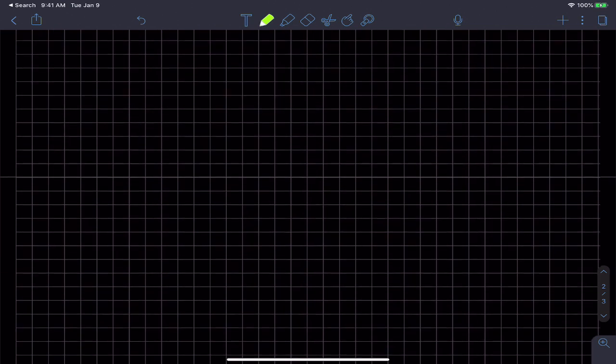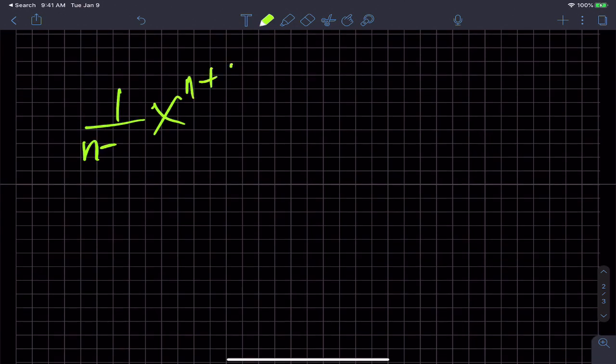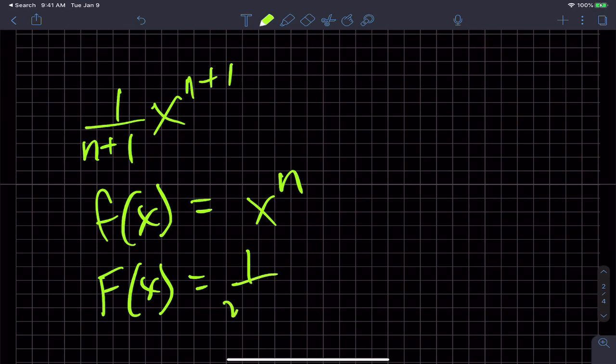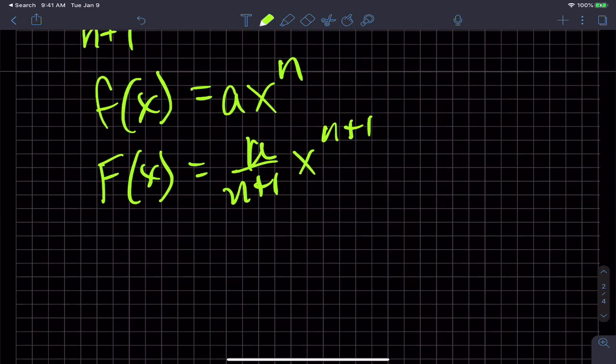Now the rule that's written down on the white sheet looks like this just for power functions. One over n plus one, x to the n plus one. If my function is x to the n, then my antiderivative must equal one over n plus one x to the n plus one. And I suppose if you had a coefficient here, we'd call it a.